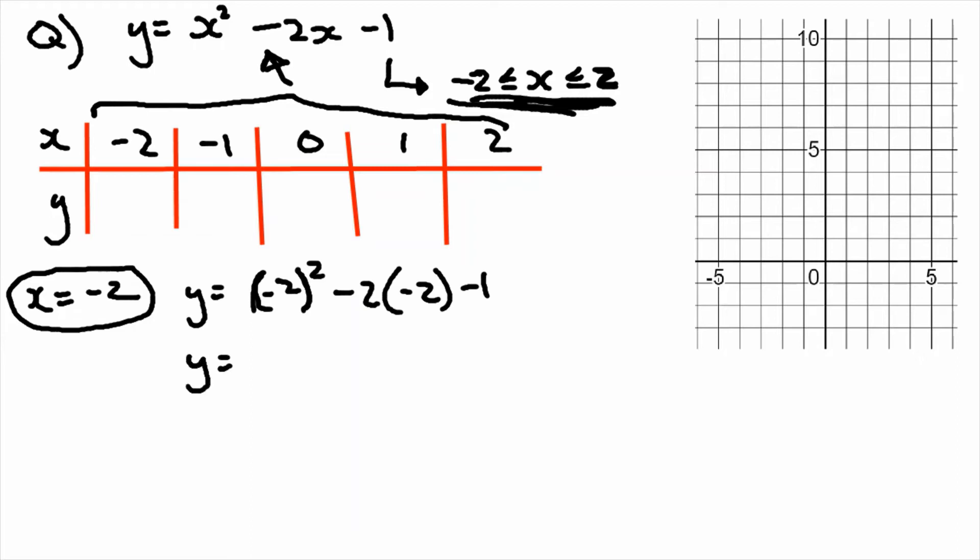So minus 2 squared, well minus 2 times minus 2 is going to give you positive 4. Minus 2 times minus 2, again another positive 4, and we've still got this subtract 1, so it's going to give us 7.